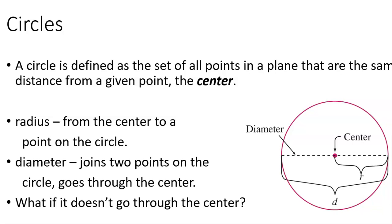A circle — we already defined it: the set of all points in the plane the same distance from the center. Being in the same plane means it's not a sphere, it's a circle. The radius is the distance from the center to a point on the outside. If you go from end to end through the center specifically, that's the diameter. A segment that goes from one point on the circle to another without going through the center is called a chord. The diameter can also be defined as a chord that passes through the center.